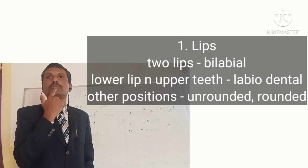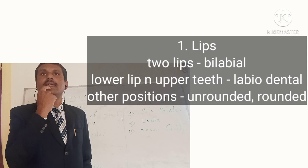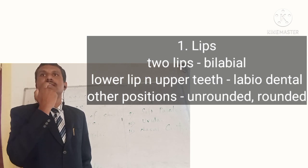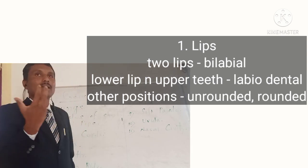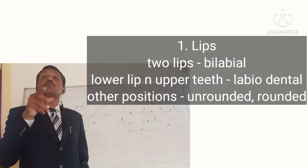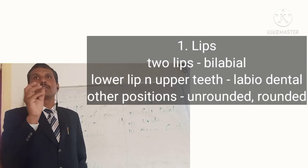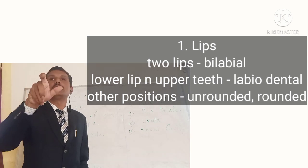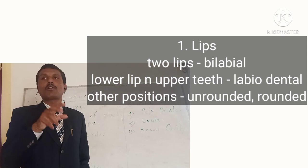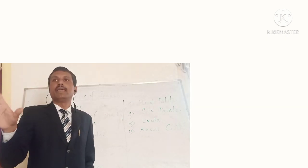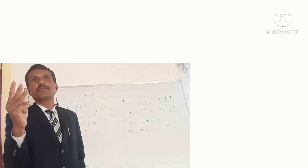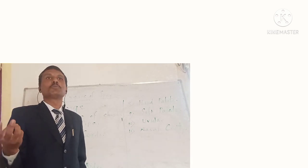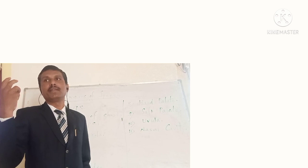There is also a sound produced with the help of the lower lip and the upper teeth. We call it a labiodental sound — 'labial' for lip and 'dental' as the adjective for teeth. Lips also play a vital role in the production of certain vowels, as they assume different positions: neutral, rounded, open rounded, or closed rounded. Accordingly, the vowels are given their names.